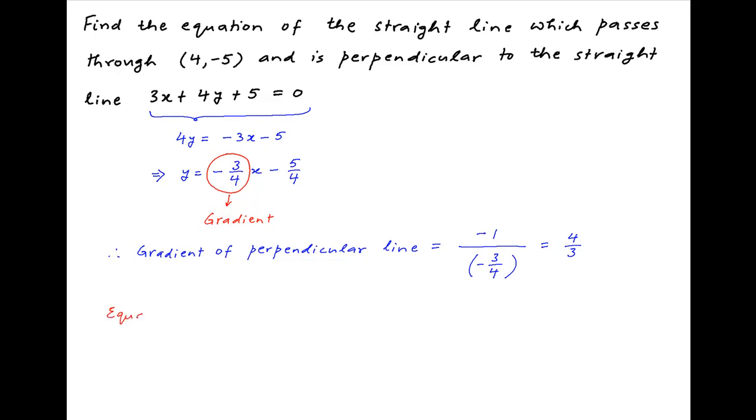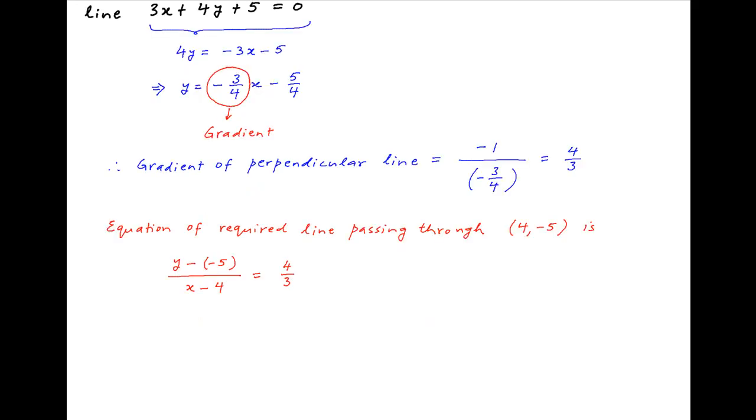Therefore, the equation of the straight line which passes through (4, -5) and is perpendicular to the given straight line is y minus (-5) divided by x minus 4 is equal to 4 upon 3. Cross multiplying,